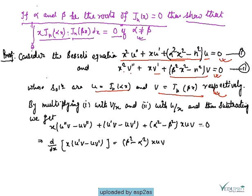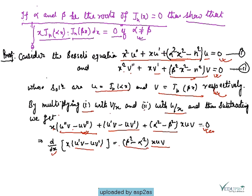By multiplying equation one by v/x and equation two by u/x, then subtracting, we get x(u''v - uv'') + (u'v - uv') + (α² - β²)xuv = 0. This can be written as d/dx[x(u'v - uv')] = (β² - α²)·x·uv.